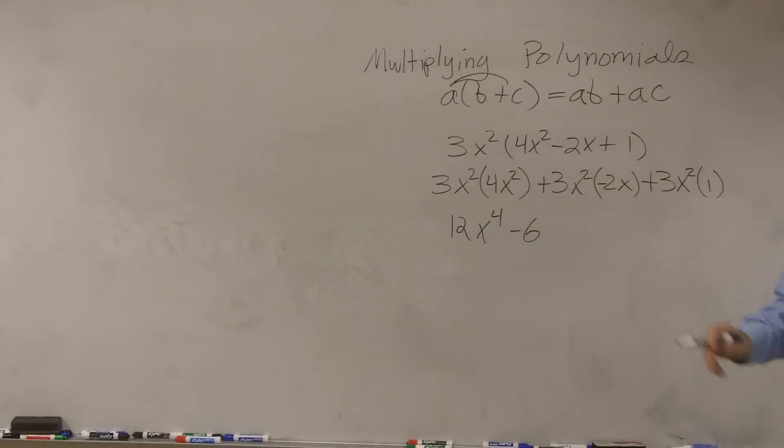x squared times x, remember, when you just have an x, that's x to the first power. So that's going to provide you with x cubed plus 3x squared, which is just going to leave you with plus 3x.